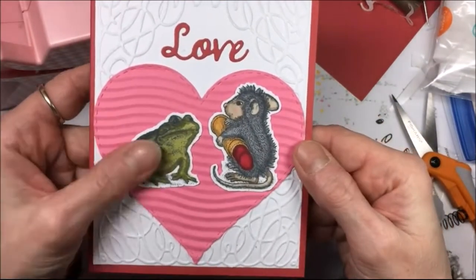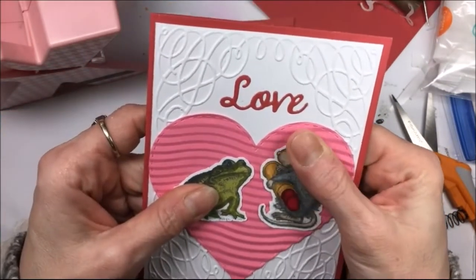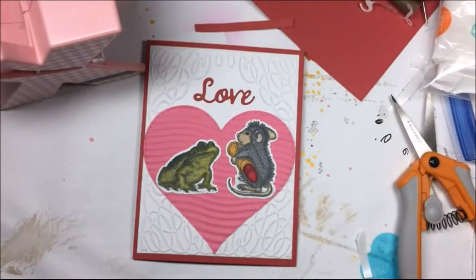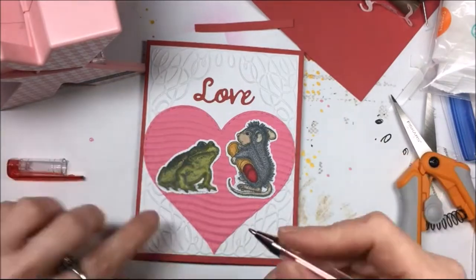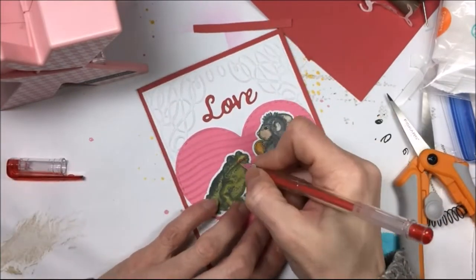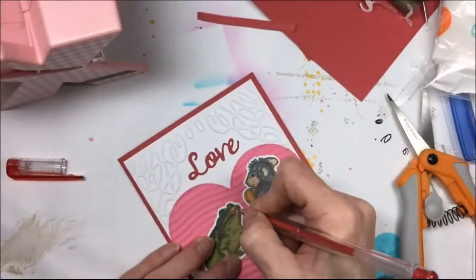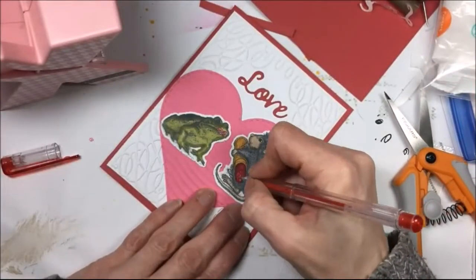I use my Tombow adhesive dots again and I just stick the mouse and the toad right where I want them. Isn't that cute? Now I decide it needs a little bit more of something, so I take my red glitter gel pen and I decide to put lips on the toad to make it look like the toad had lipstick on.